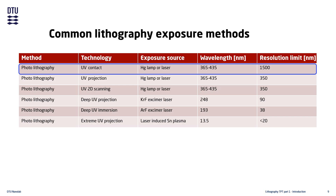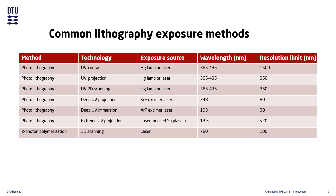The next method is two-photon polymerization. This method works by focusing a laser beam to a tiny spot which can then be moved around in all three dimensions. The energy of the individual photons used in the laser is insufficient to cause a chemical reaction when they hit a molecule in the resist, but when two photons hit the same molecule at the same time, the energy becomes large enough to cause a chemical reaction — hence the name two-photon polymerization. This method is used for creating three-dimensional structures.